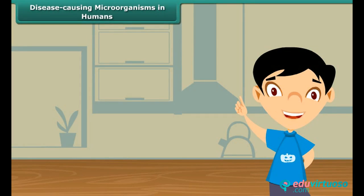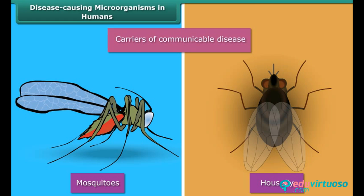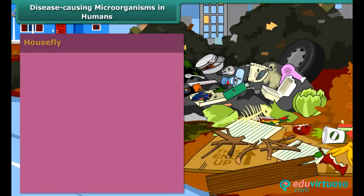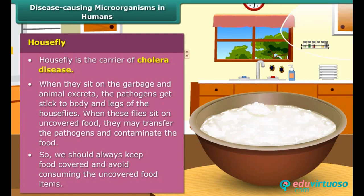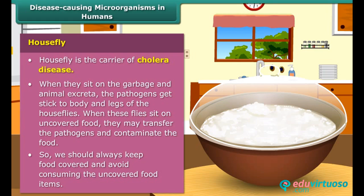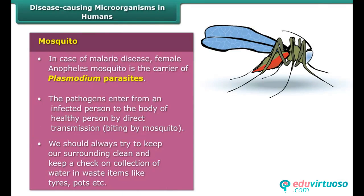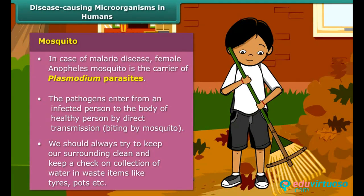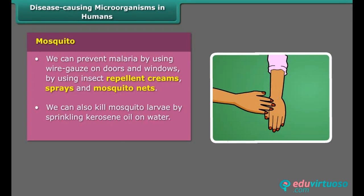Some insects and animals found in our surroundings act as carriers of pathogens. Houseflies and mosquitoes are common examples of such carriers. In cholera, the housefly is the carrier of many pathogens; to prevent cholera we should always keep food covered and avoid consuming uncovered food items. In malaria, the female Anopheles mosquito is the carrier of Plasmodium parasites. We should use repellent creams, sprays, and mosquito nets to prevent malaria.